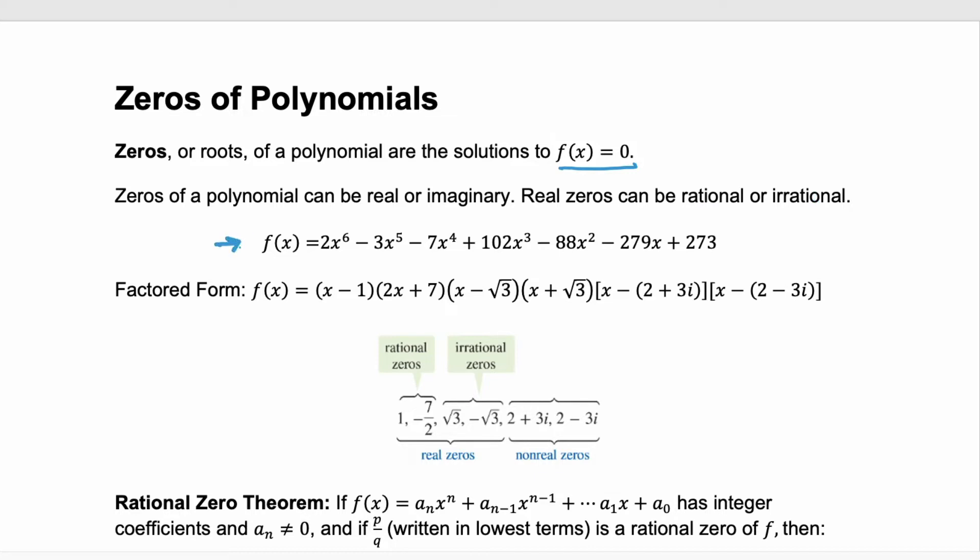Here we're given a polynomial f(x), and if we factor it, we end up with a factored form, and we see that we have six zeros. Each of these factors gives us a zero. We would use that zero product property that says take a factor, set it equal to zero, and solve. So this first factor has a zero of x = 1. You do that for each of these six factors, and you get these six zeros. Notice that we have some real zeros, some non-real zeros, some rational, and some irrational zeros.